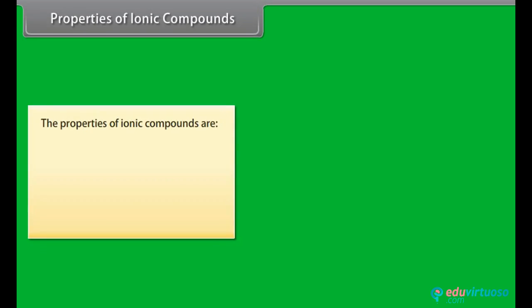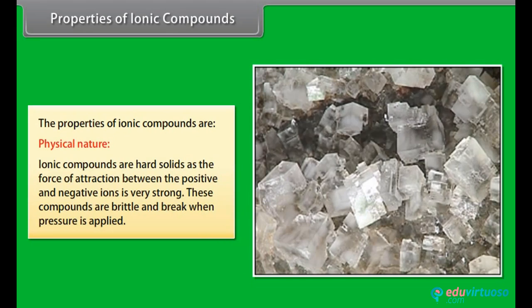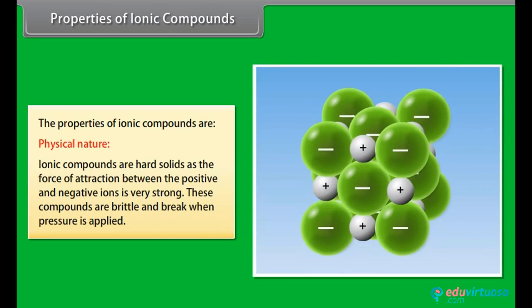Properties of Ionic Compounds. Let us look at some Ionic Compound properties. Physical Nature: Ionic compounds are hard solids as the force of attraction between the positive and negative ions is very strong. These compounds are brittle and break when pressure is applied.